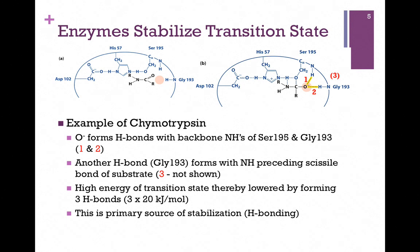There is a third hydrogen bond that forms with the carbonyl group of glycine 193 and the amine group preceding the scissile bond of the substrate — that's not shown in our illustration here. Suffice it to say, there are three hydrogen bonds that form in the process of interacting with this transition state. Each of those hydrogen bonds averages about 20 kilojoules per mole, so that represents 60 kilojoules per mole total. In other words, our high-energy transition state has been reduced by 60 kilojoules per mole to form those hydrogen bonds. This is the primary source of stabilization.